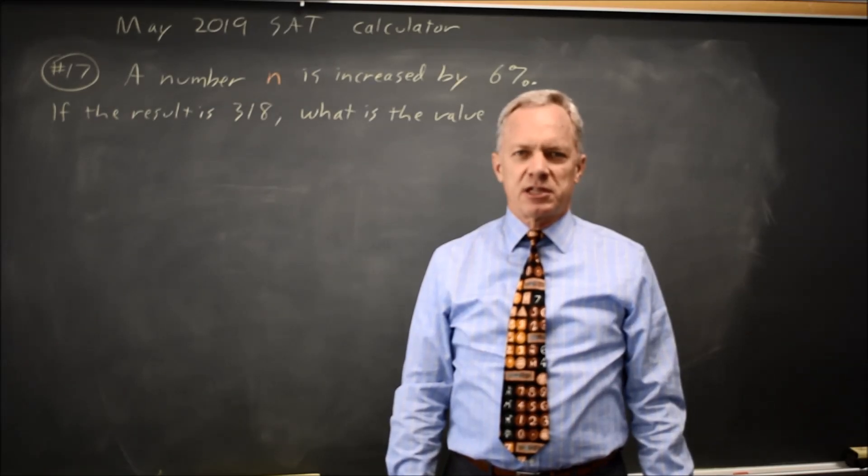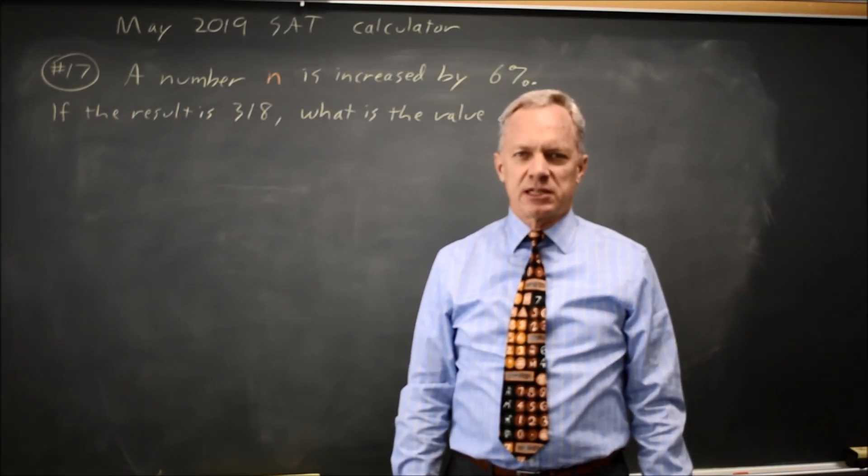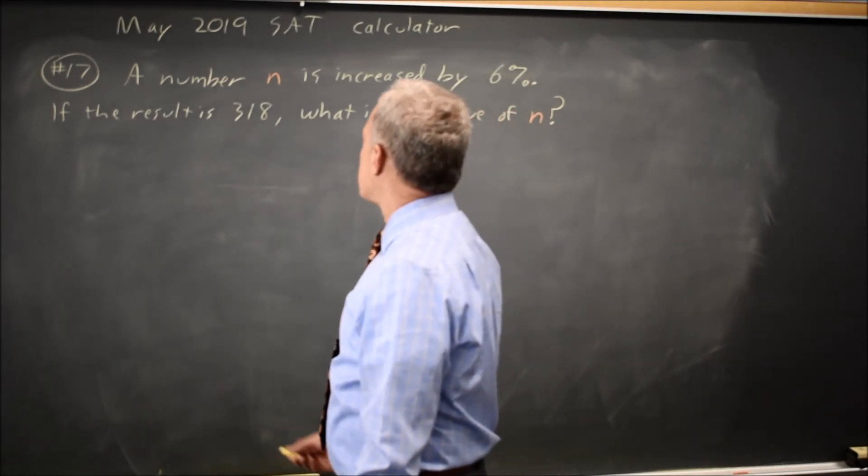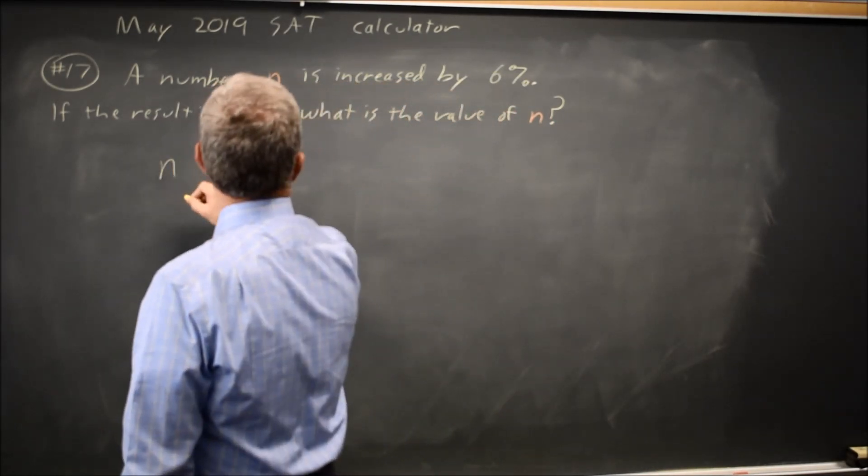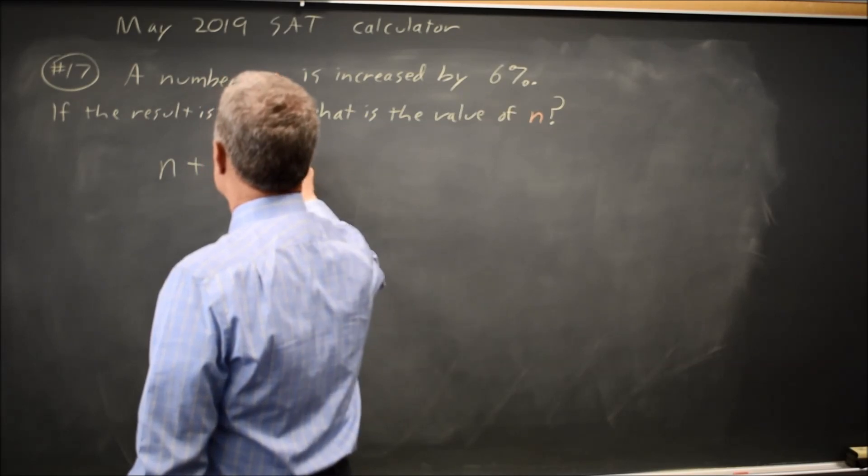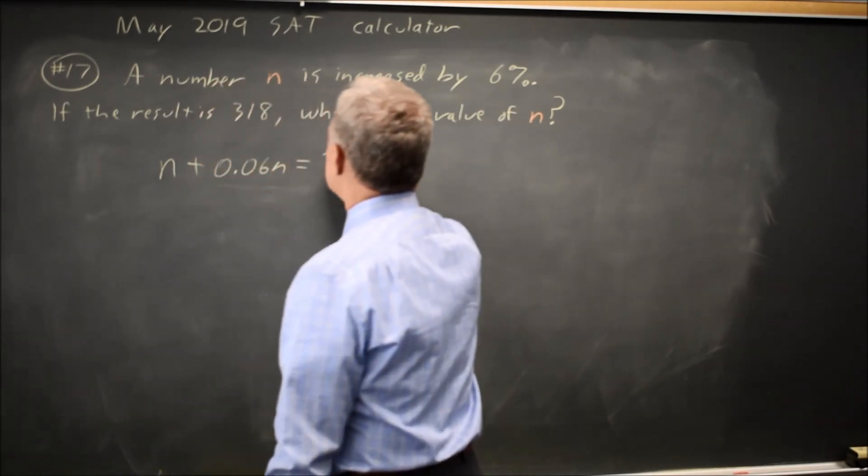This is calculator question number 17 from the May 2019 SAT. College Board tells us that a number n is increased by 6% and the result is 318.